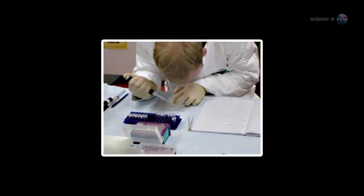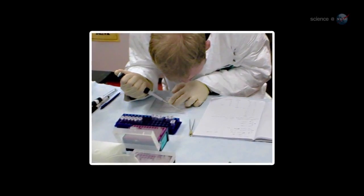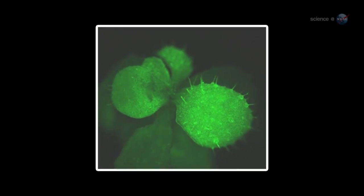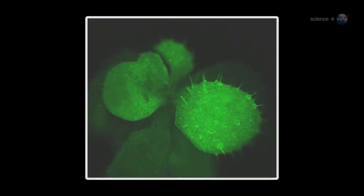Cameras captured growth rates, root patterns, and a strange green glow. We genetically modified the plant to glow when it is under stress, explains Paul. This can tell us a lot about how Arabidopsis adapts to the microgravity environment.